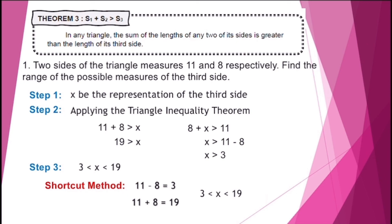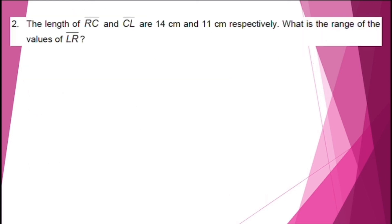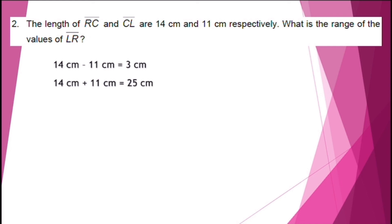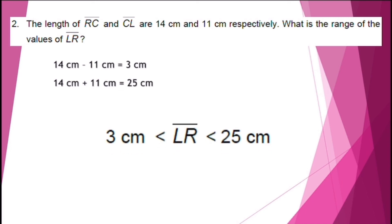For another example, the lengths of line segment RC and line segment CL are 14 cm and 11 cm respectively. What is the range of values of line segment LR? Using the shortcut method: 14 − 11 = 3 cm and 14 + 11 = 25 cm. So the inequality is 3 cm < LR < 25 cm.